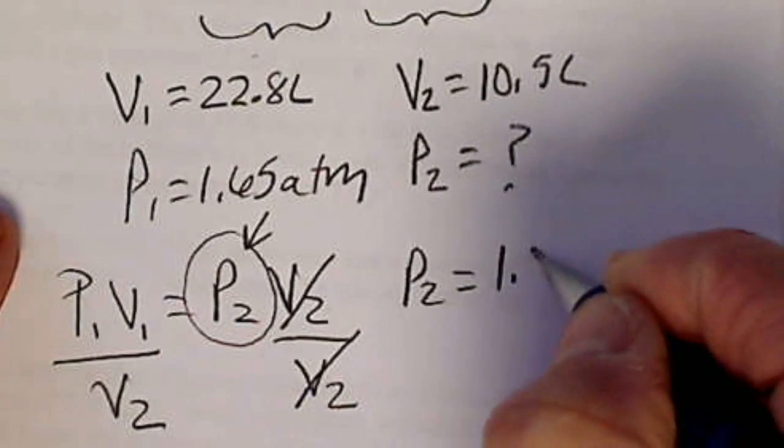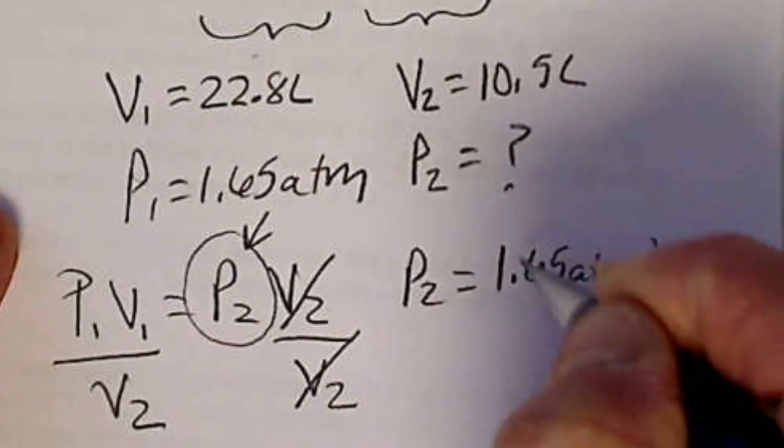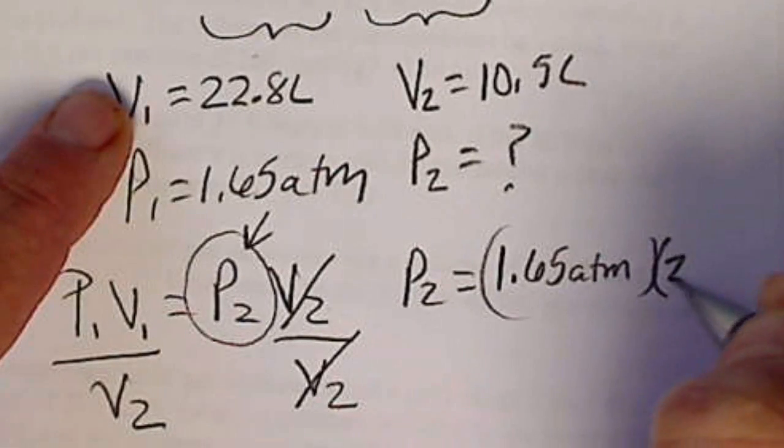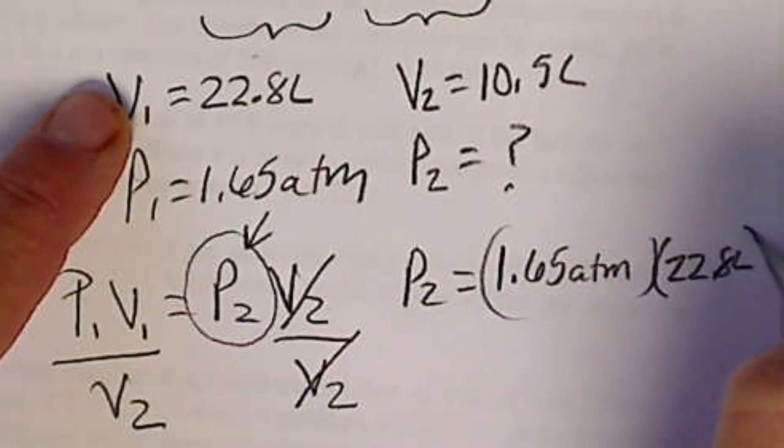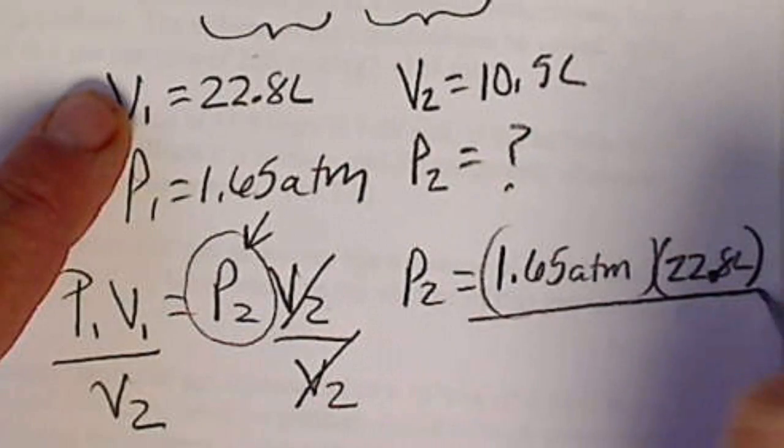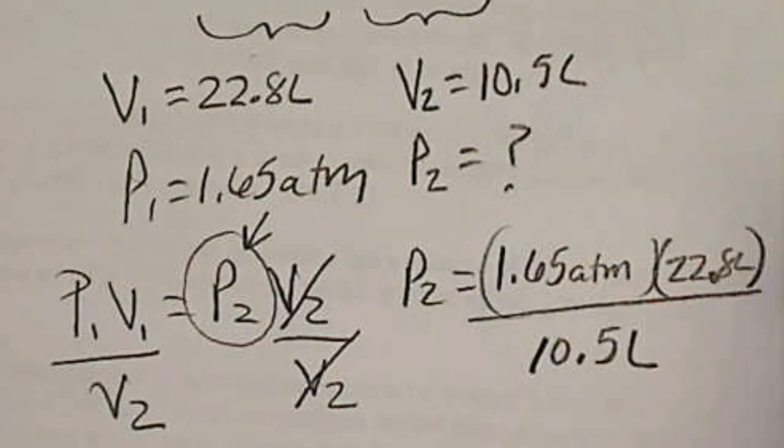And then we see that P2 is P1 times V1. And P1 is 1.65 atmospheres. V1 is the 22.8 liters. And V2 is 10.5 liters.